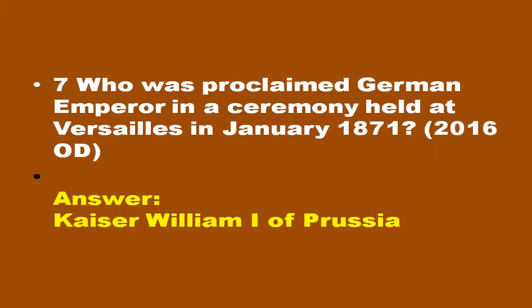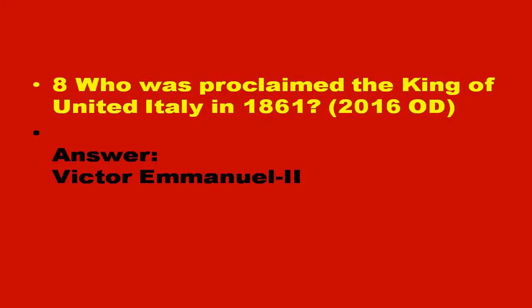Question number 7: Who was proclaimed German Emperor in a ceremony held at Versailles in January 1871? Question number 8: Who was proclaimed the king of united Italy in 1861? The answer is Victor Emmanuel II.